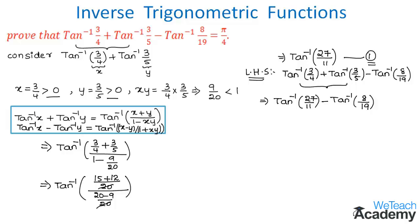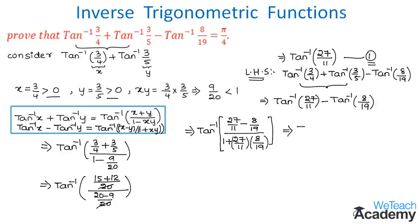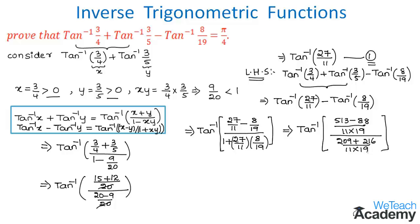Applying the subtraction formula: x minus y is 27/11 minus 8/19, and 1 plus xy is 1 plus (27/11)(8/19). Simplifying with common denominator 11×19: the numerator becomes 27×19 minus 11×8, which is 513 minus 88 = 425. The denominator becomes 11×19 plus 27×8, which is 209 plus 216 = 425. Both denominators cancel, giving tan inverse (425/425).